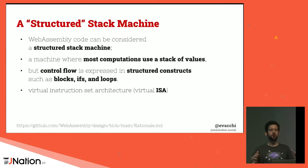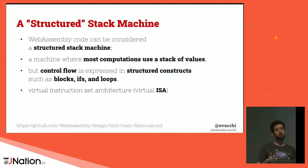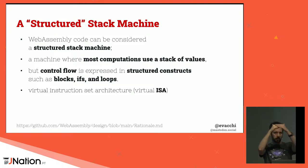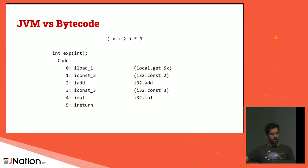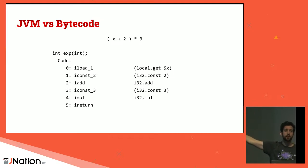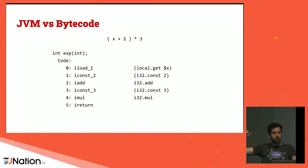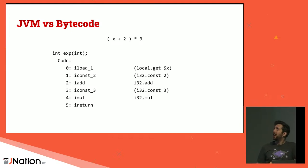Let's talk about the architecture of WebAssembly. WebAssembly is a structured stack machine — not just a stack machine like the JVM. Most computations use a stack of values, but some instructions are structured. You cannot do jumps around in your code body. While you can do arbitrary jumps in JVM bytecode, in WebAssembly you can only do structured ifs, loops, and blocks. On the left is JVM bytecode, on the right is the WebAssembly textual representation. For the expression x + 2 * 3 with x=4: you push 4, push 2, add to get 6, push 3, multiply to get 18. The extraction is identical on both sides.